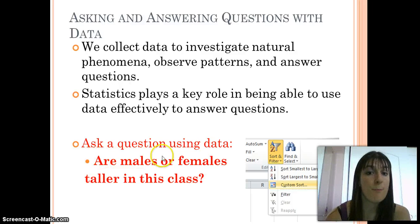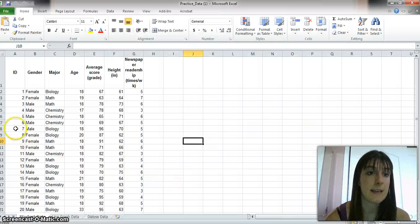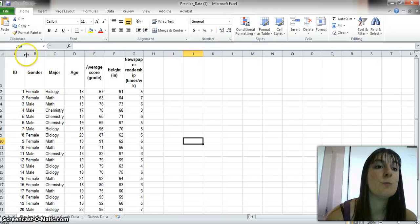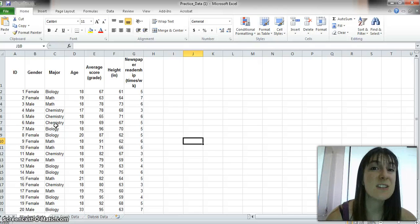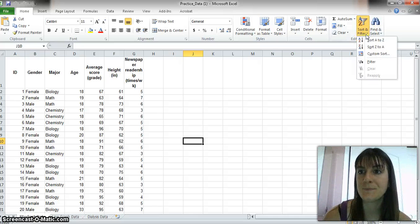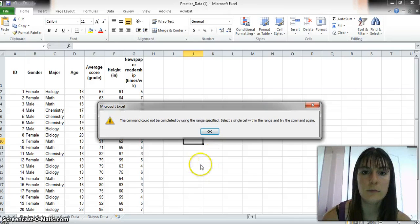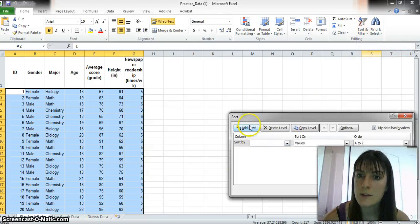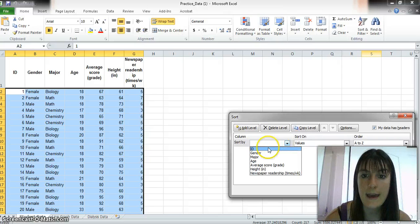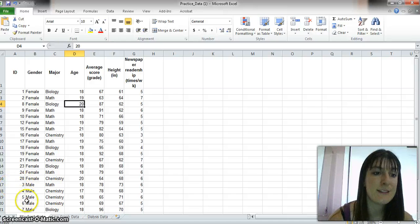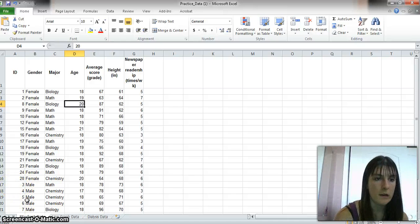I'd like to start by asking the question, are males or females taller in this class? I want to use Excel to help me put all the females together and put all the males together. I'm going to go up to sort and filter, click there, and do a custom sort. I would like to sort by gender.